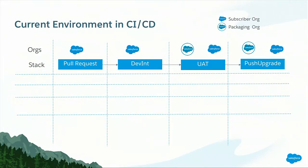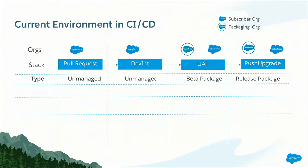Let's also look into the current CI-CD environment. This is a typical testing stage that any ISV would follow to promote code from pull request all the way to pre-production. These are the different stages: pull request, which is feature testing; dev integration, which is a combination of features being tested together; and UAT, which deals with packaging. We deal with unmanaged deployment, beta packages, and release packages. A beta package is like a new client using a fresh license for the first time, and a release package is an existing customer whose org is getting push-upgraded to the latest version.